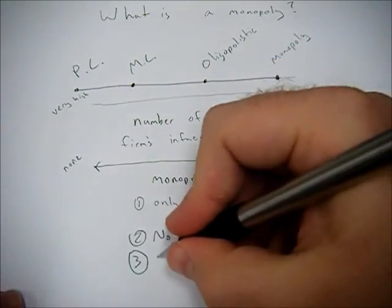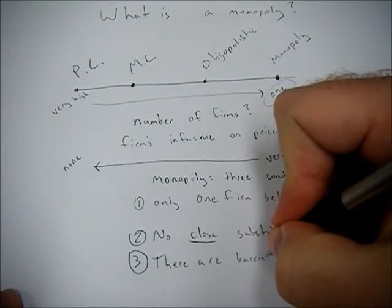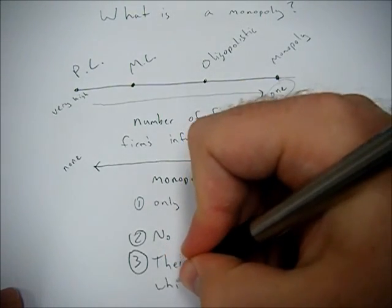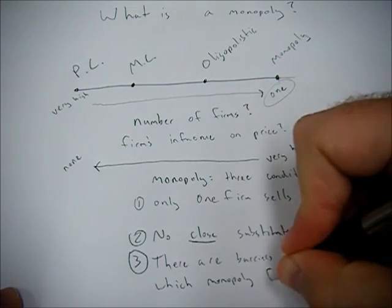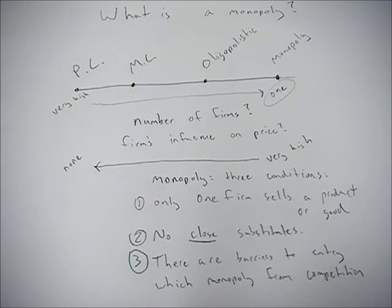The third is that there are barriers to entry which protect the monopoly from competition. So this means that a monopoly has to have a lot of capital. In other words, think of a car manufacturer. If there was only one company producing cars, say Toyota, and somebody else wanted to start up a car manufacturing company, they would require a lot of money to invest in all of the goods, factories, capital, and everything else necessary to start that company.